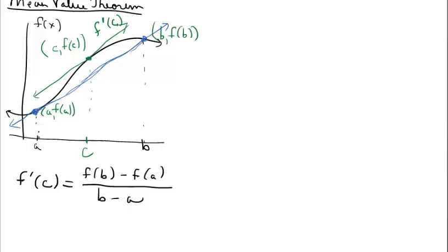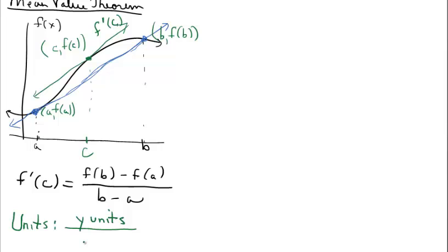One final thought here: I want to talk about the units of a rate of change. When we're talking about a rate of change, we have fractional units. We take the y units, whatever they are on the y-axis, and divide by the x units, whatever they are on the x-axis. So the units of the answer would be y units divided by x units.